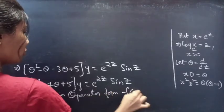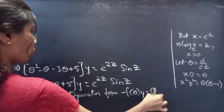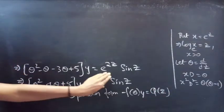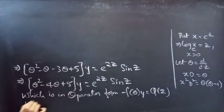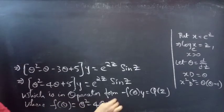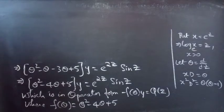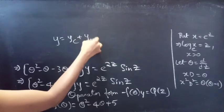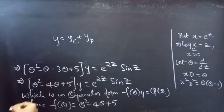So we have f(θ) · y equals Q(z), a function of z, where f(θ) equals θ² minus 4θ plus 5. Now we need to find the general solution to the given equation, which is given by y equals yc plus yp. Let's find yc and yp now.